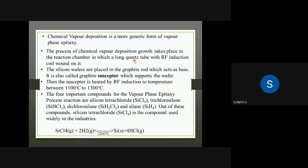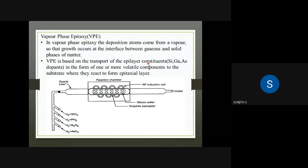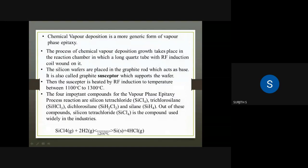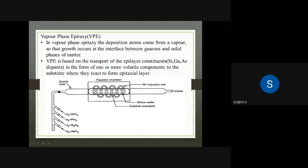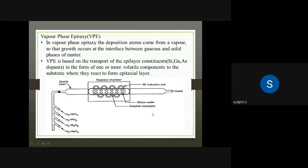In the vapor phase epitaxy process, the growth takes place in a reaction chamber heated by RF induction. Silicon wafers are placed on a graphite susceptor, which is heated using RF induction coils.